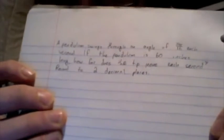Hi, I'm Chris Tomko, and here is the problem we're doing today. A pendulum swings through an angle of 5 pi over 16 each second. If the pendulum is 60 inches long, how far does the tip move each second? And we're going to round to the nearest hundredths, or two decimal places.